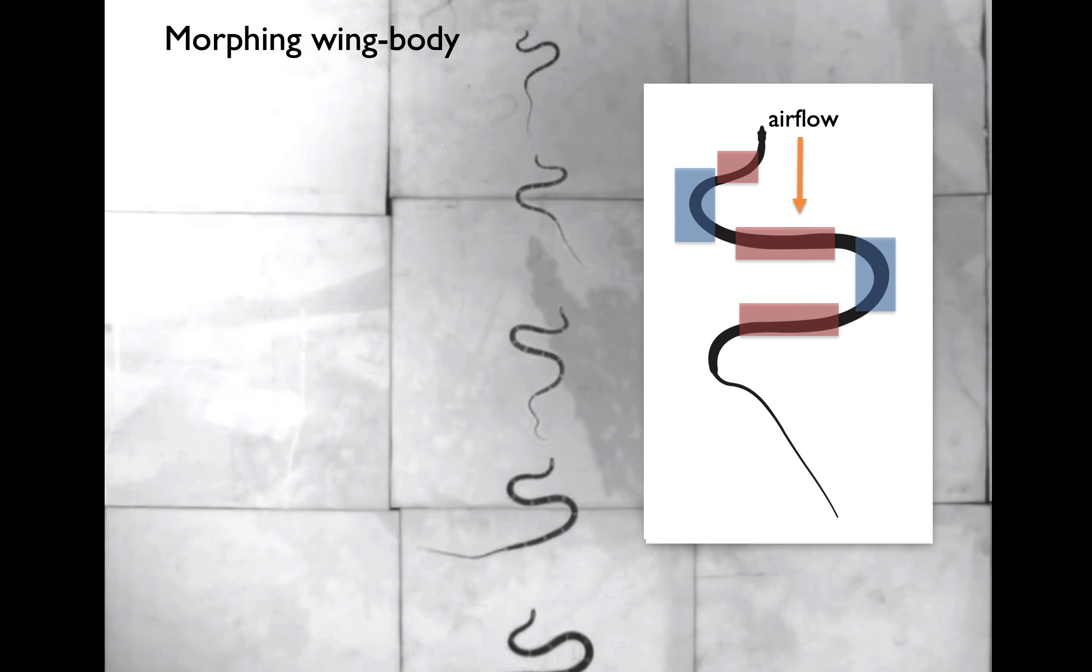As the snake undulates, it propagates these features down the body, and then forms a new straight segment near the head, and continues until it lands.